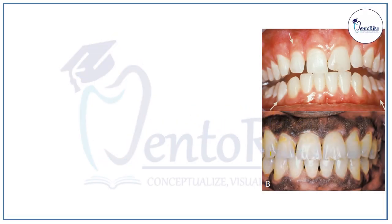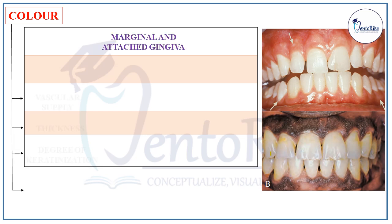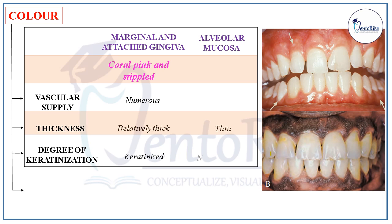The first heading will be the color of gingiva. If we talk particularly about the marginal and the attached gingiva, because of the relatively thick and keratinized epithelium and numerous blood vessels within the connective tissue, the marginal and the attached gingiva is coral pink. However, if you talk about the alveolar mucosa, then because of the thin and non-keratinized epithelium and even more numerous blood vessels lying in the connective tissue, the alveolar mucosa is red, smooth and shiny.